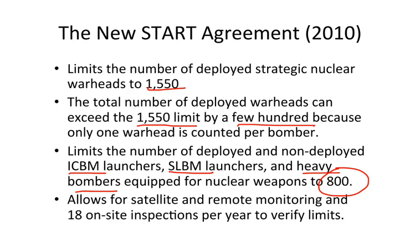It also allows for satellite and remote monitoring, and significantly, 18 on-site inspections every year to verify that the other is in fact abiding by the agreement. So it was a fairly comprehensive agreement, hailed as another in a series of positive developments in arms control between the United States and Russia.